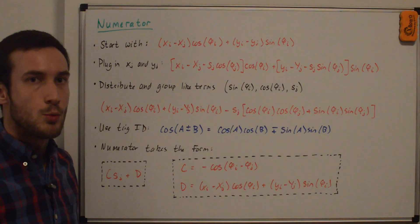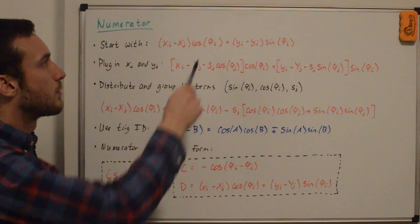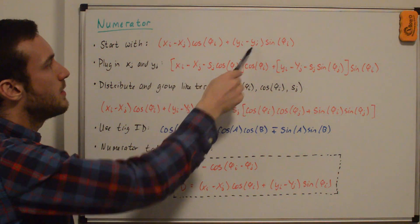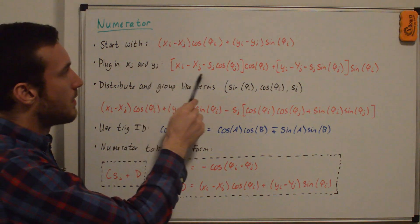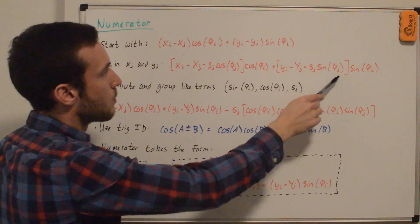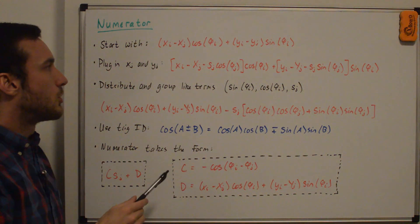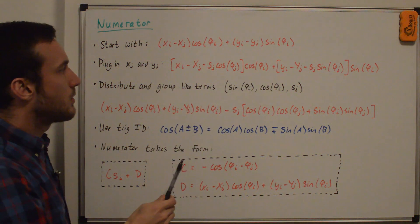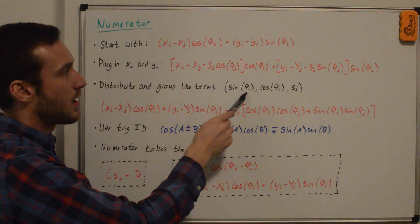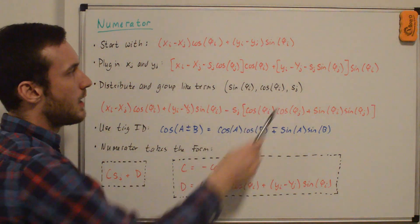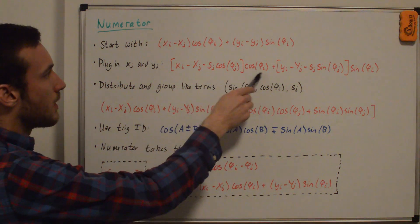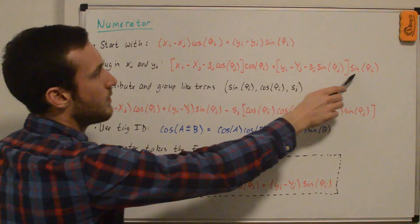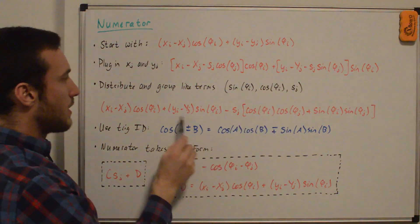So we're going to start by trying to simplify down the numerator first. So that's just repeated up here from the previous whiteboard. First thing we're going to do is plug in for the lowercase xj and yj into here. And so that's what you're seeing here. You see the xi minus the lowercase xj term and the lowercase yj term. Now we're going to distribute this and this into the bracketed terms. And we're going to group the like terms. In this case, sine phi i, cos phi i, and sj. So you can see for the cos phi i term, it'll be xi minus xj. For the sine phi i, it'll be yi minus yj.